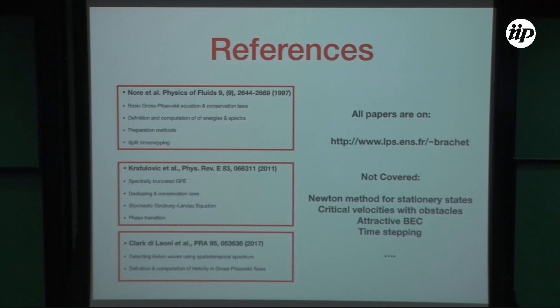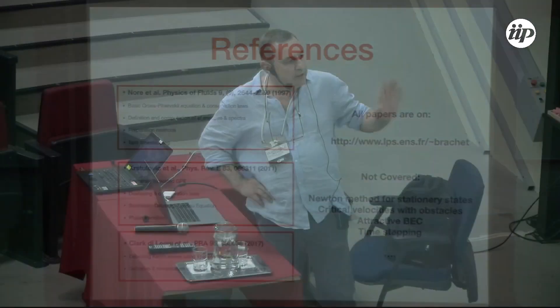First, the paper. Basically, I will discuss how to compute a fluid dynamical type of energy spectrum. It's not split time stepping, not covered time stepping — preparation methods. I'll tell you more about that. Then I'll go on to talk about finite temperature models, such as the spectrally truncated Gross-Pitaevskii, de-aliasing and conservation, and some stochastic models. And if I have enough time, I want to finish with a little bit about helicity.